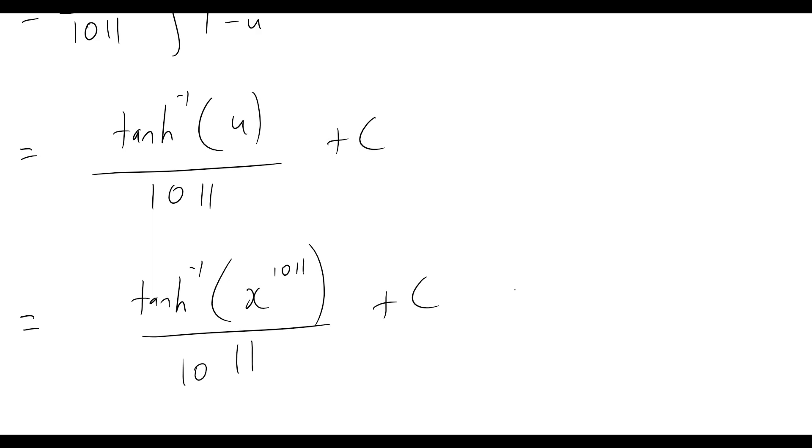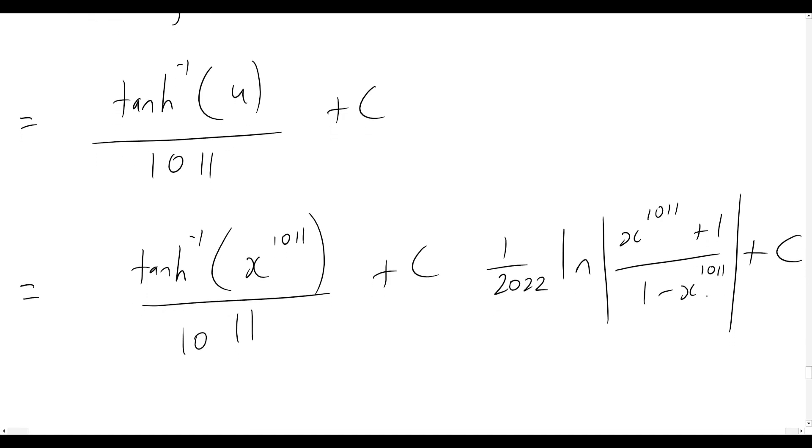If you did approach this problem using the partial fraction decomposition method, then you'd end up with an answer of 1 over 2022 times the natural logarithm of x to the 1011 plus 1 over 1 minus x to the 1011 and then still plus some constant c. This is the exact same thing since we know that the hyperbolic tan function can be rewritten in log form as half ln of x plus 1 over 1 minus x, and here we had x is to the power of 1011.